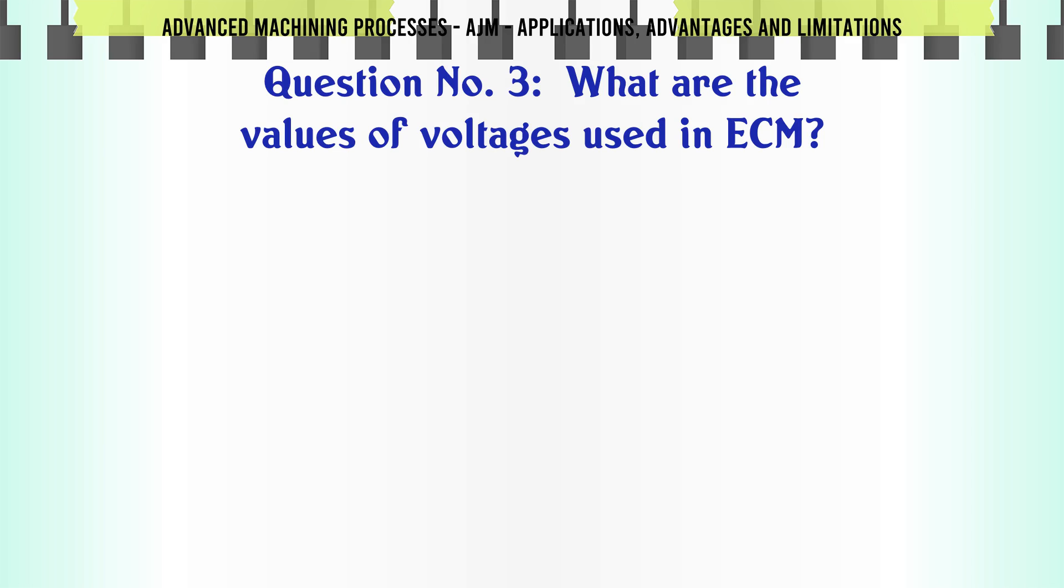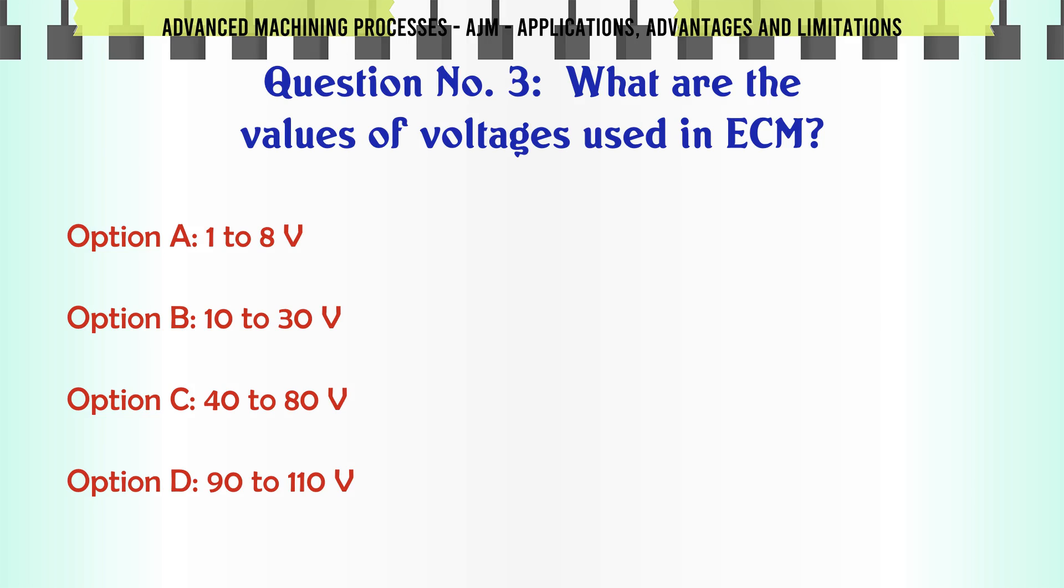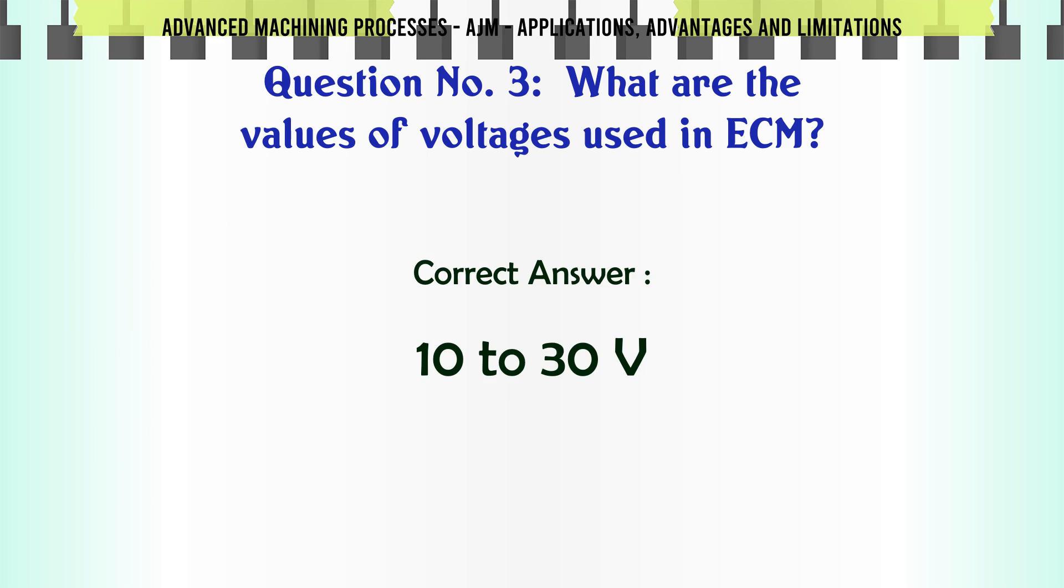What are the values of voltages used in ECM? Option A: 1 to 8 V. Option B: 10 to 30 V. Option C: 40 to 80 V. Option D: 90 to 110 V. The correct answer is 10 to 30 V.